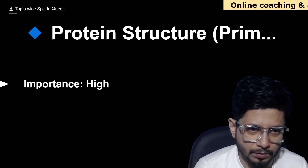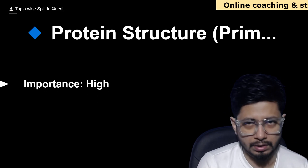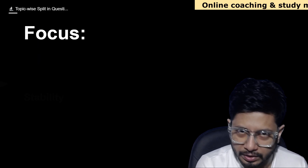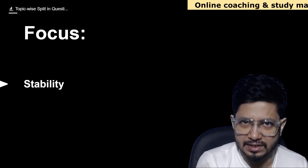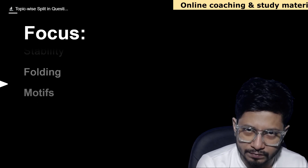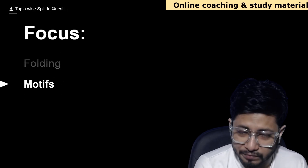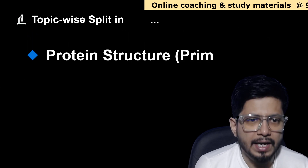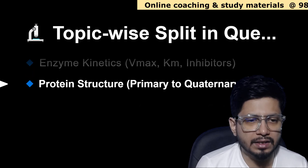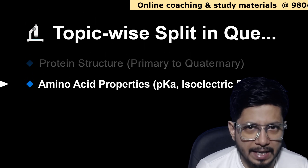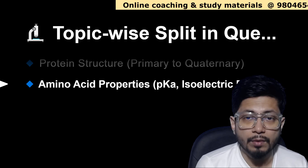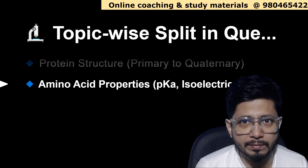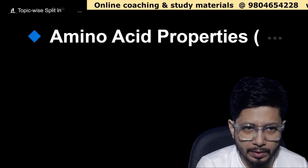Next is protein structure — primary, secondary, tertiary, and quaternary structure of proteins. The importance level is high. The focus for these protein structure topics includes stability of proteins, folding of proteins, and protein motifs.